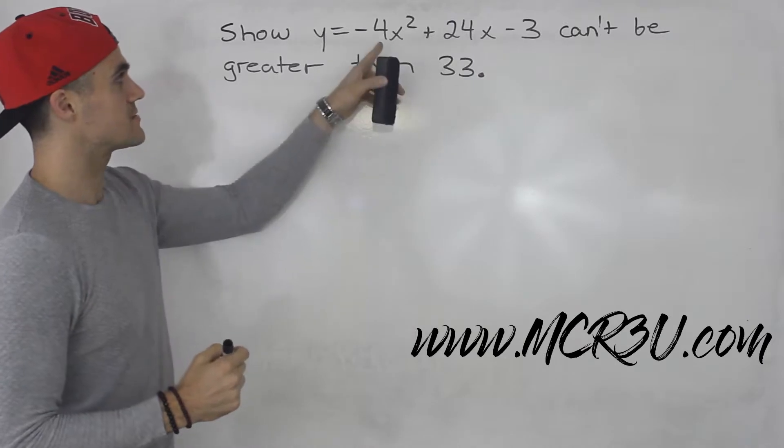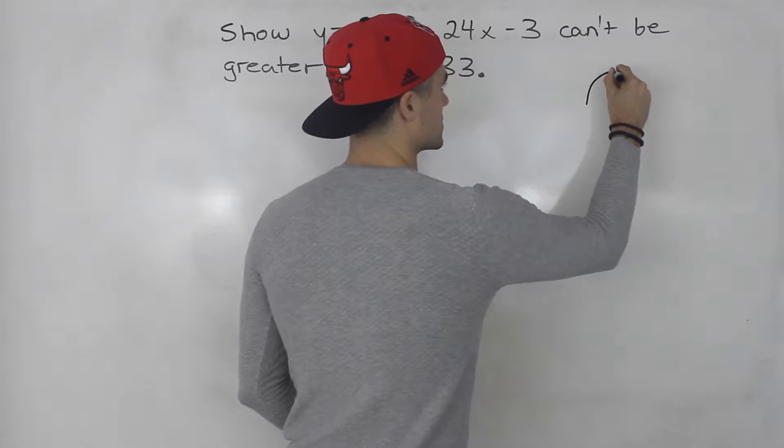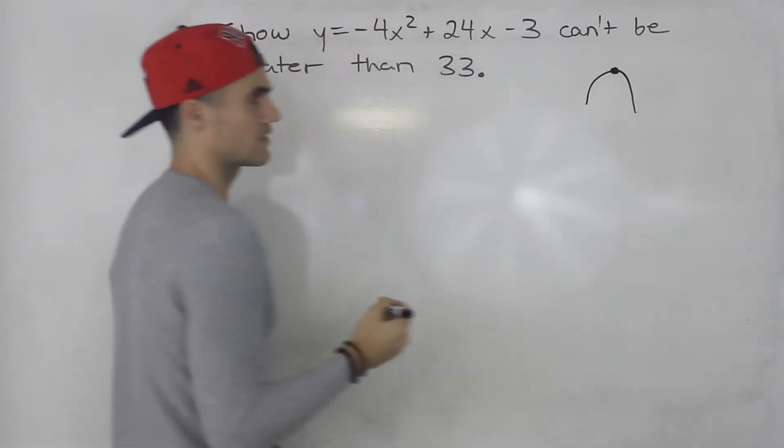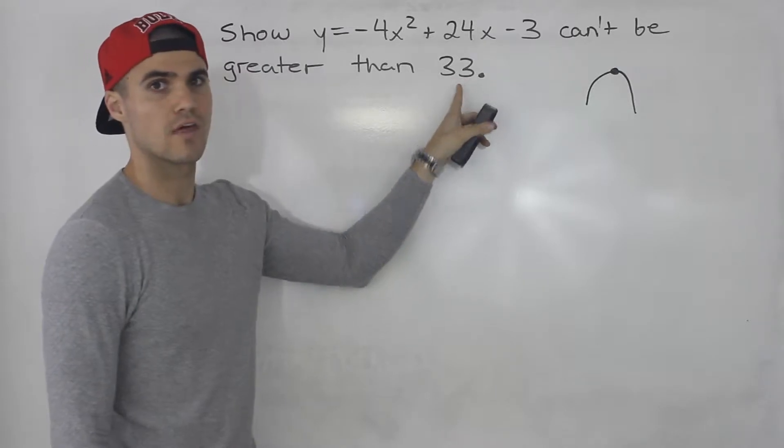Notice that this parabola is going to be opening down, so it's going to have a maximum value. All we have to show is the y-value of that vertex is not going to be greater than 33.